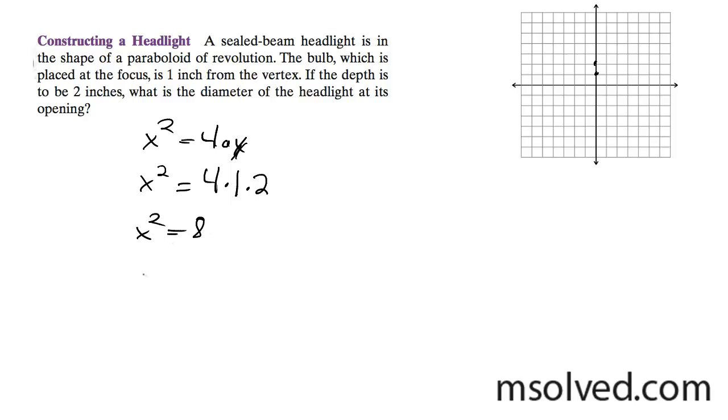Take the square root of both sides, we get x is equal to the square root of eight, which is equal to the square root of four times two, which is equal to two root two.